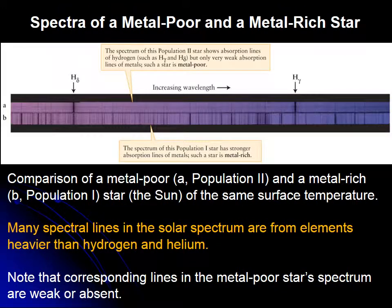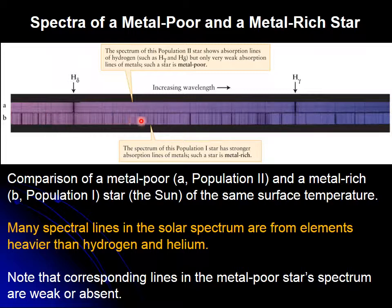We can see the spectrum of a metal poor and a metal rich star. The metal poor star doesn't have many metals — it has hydrogen and just a few traces of other elements. Whereas the population one, metal rich star shows many, many absorption lines of light absorbed by elements in the atmosphere of that star.